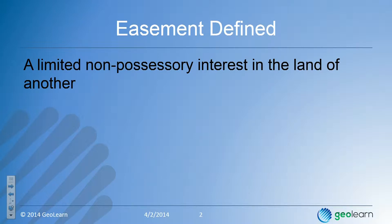In defining an easement, this is the best definition of an easement that I have found: a limited non-possessory interest in the land of another. I want to break that down because it says everything that needs to be said about an easement and there's nothing extra there.